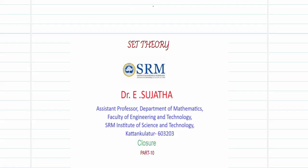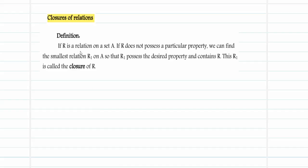We will now see what is meant by closure of any relation. If R is a relation defined on the set A, and R does not satisfy any particular property, then we can find the smallest relation R1 on the set A so that R1 possesses the desired property and also contains R.